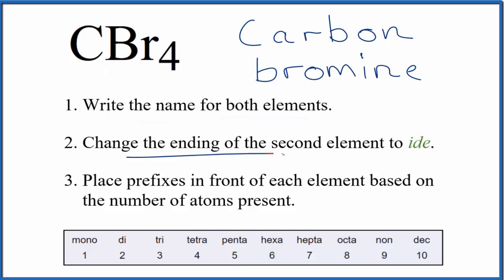Next, we change the ending on the second element to ide. So we cross out INE and write IDE. So far, we have carbon bromide as the name for CBr4.